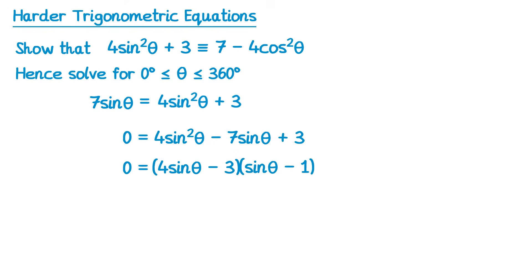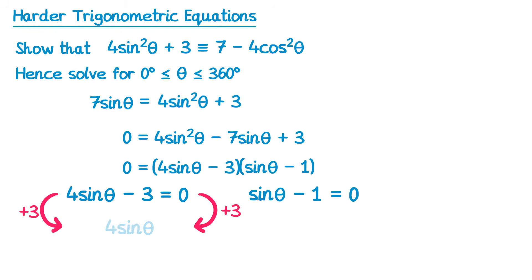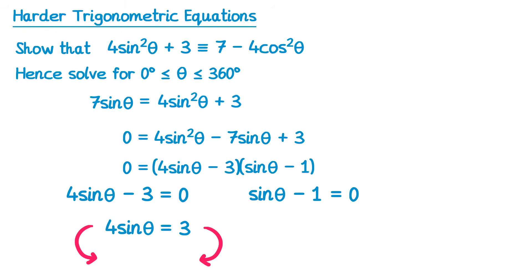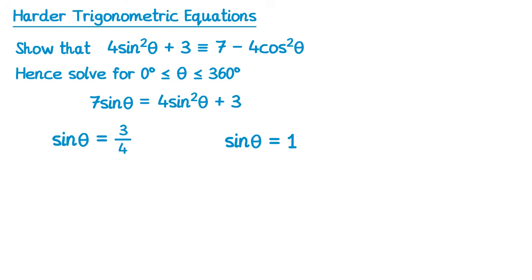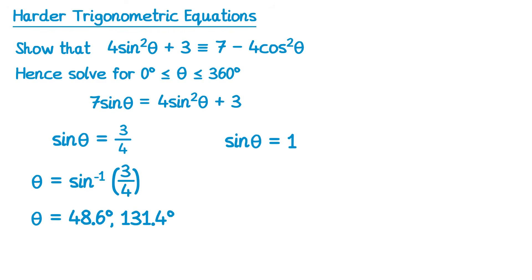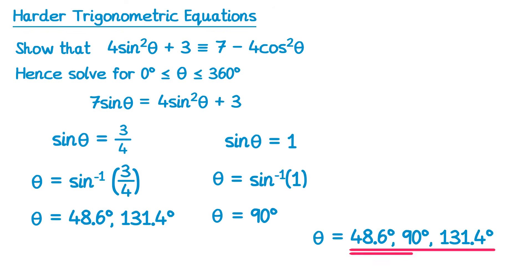Setting each bracket to 0: 4 sin theta minus 3 equals 0 gives sin theta equals 3 quarters, and sin theta minus 1 equals 0 gives sin theta equals 1. For sin theta equals 3 quarters, inverse sine gives 48.6 degrees, and using graph symmetry: 180 minus 48.6 is 131.4 degrees. For sin theta equals 1, inverse sine of 1 is 90 degrees — only one solution. So there are three solutions: 48.6, 90, and 131.4 degrees.